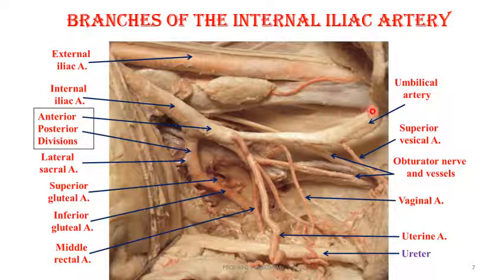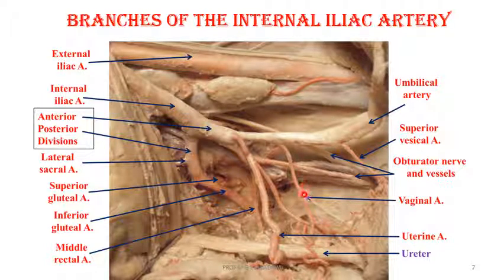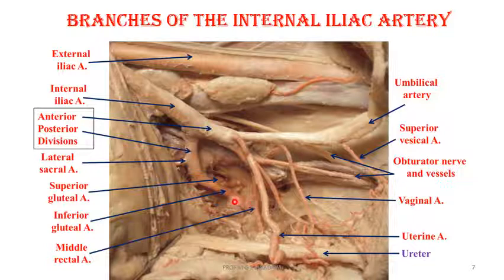We can identify: the medial umbilical ligament — the fibrosed umbilical artery, the fetal umbilical artery fibrosed after birth — giving the superior vesical. The obturator nerve, vein, and artery bundle coming out of the obturator canal is visible. The vaginal artery, which may be one or two branches, the uterine artery in relation with the ureter lying in front of it, the middle rectal artery, the inferior gluteal, the superior gluteal, and the lateral sacral arteries.